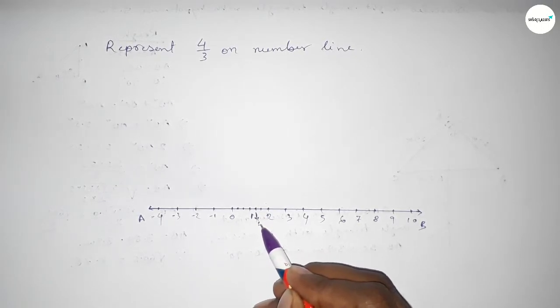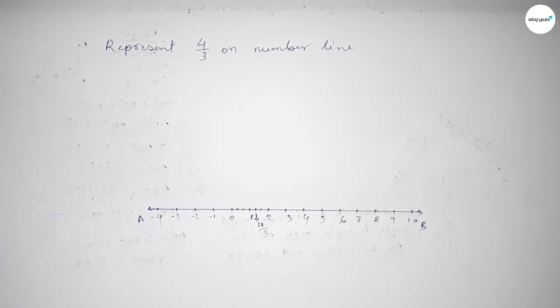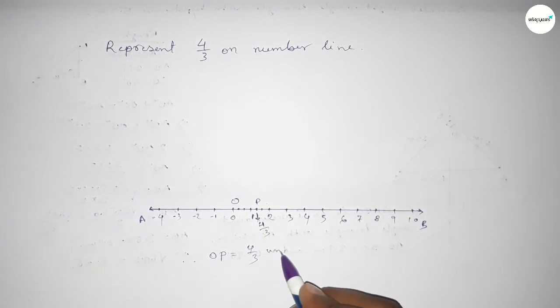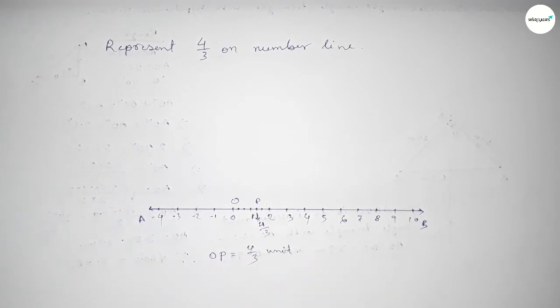So taking O and here P, therefore distance OP equal to four over three. That's all, thanks for watching. If this video is helpful to you then please share it with your friend. Thanks for watching.